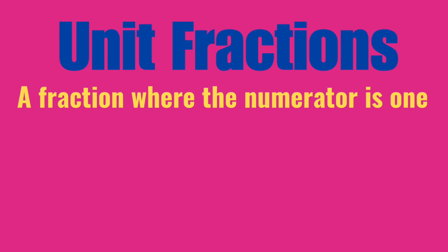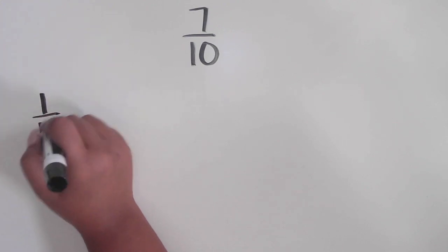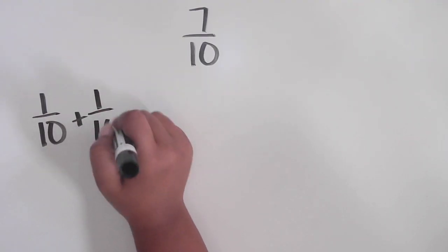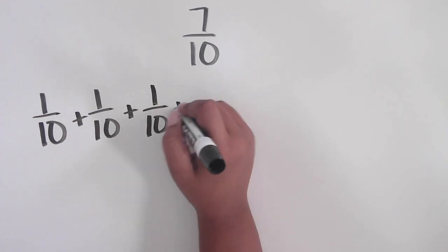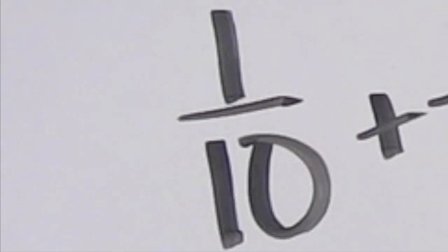A great place to start is with unit fractions, which is any fraction with a numerator of 1. Looking at the example 7 tenths, you can decompose 7 tenths into a sum of unit fractions. The unit fraction for 7 tenths is 1 tenth.